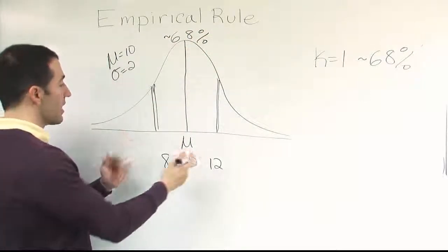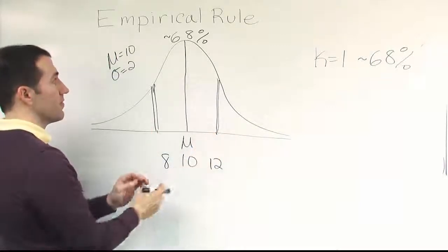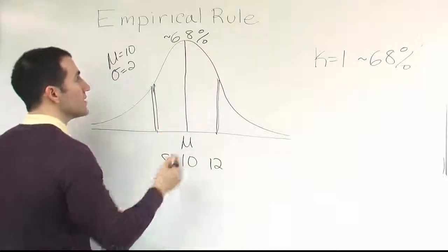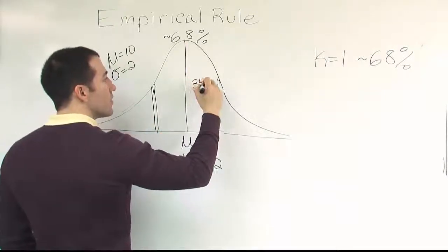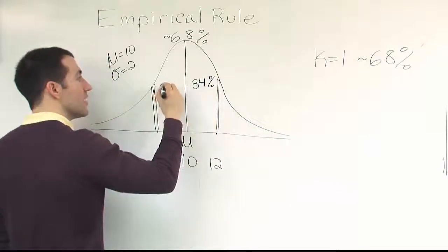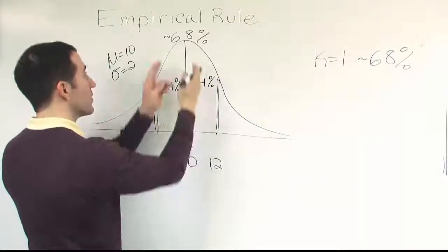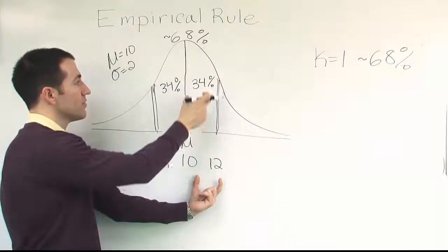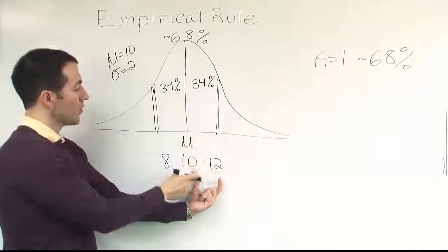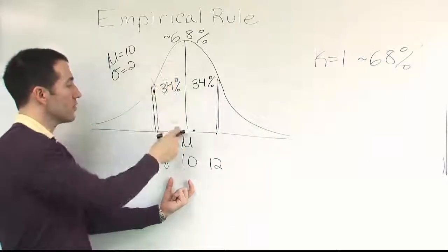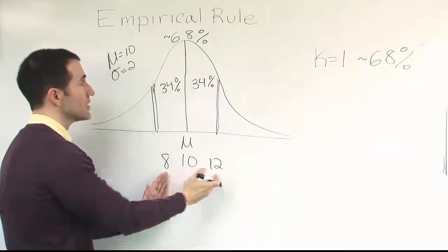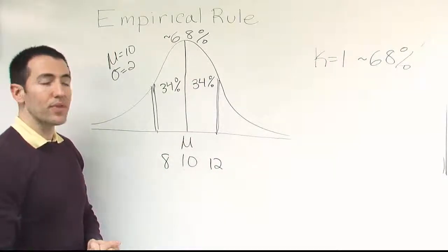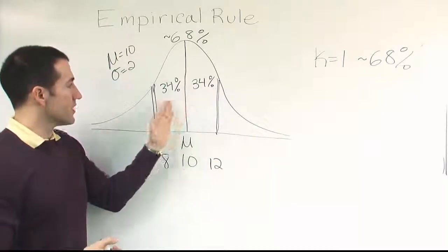The thing that's nice about this rule, since it applies to a bell-shaped curve, and the bell-shaped curve is symmetric, meaning there's equal space on both sides of the mean, we can say that this 68% is 34% on the right and 34% on the left. That's a really nice trait. Because it's symmetric, we know that half is on each side.